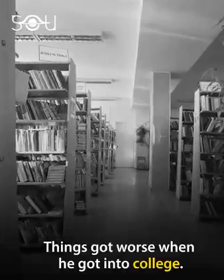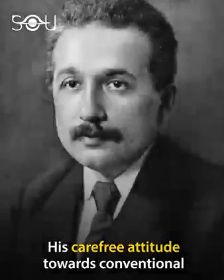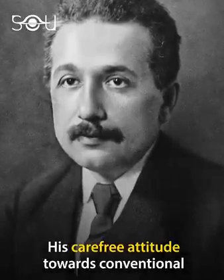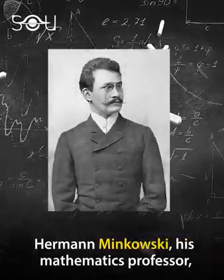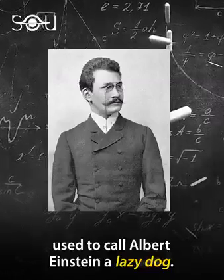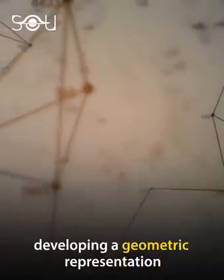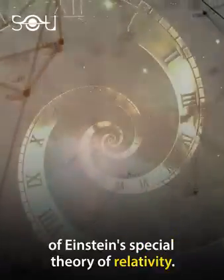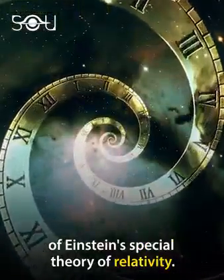Things got worse when he got into college. His carefree attitude towards conventional learning offended his professors. Hermann Minkowski, his mathematics professor, used to call Albert Einstein a lazy dog. Interestingly, Minkowski spent his later life developing a geometric representation of Einstein's special theory of relativity.